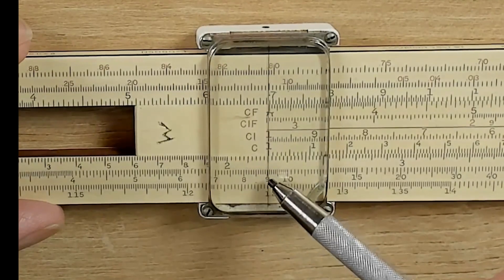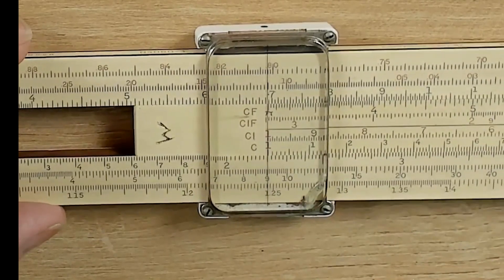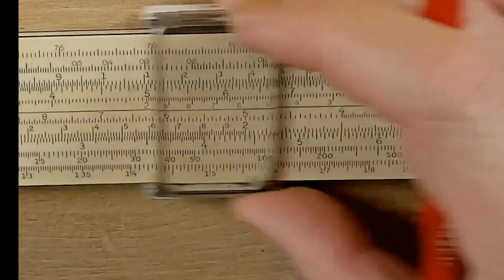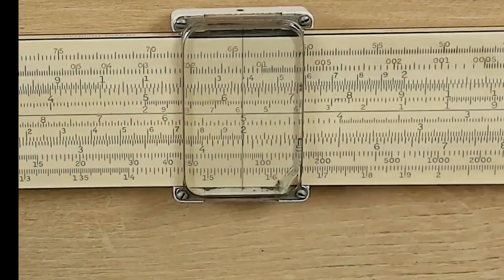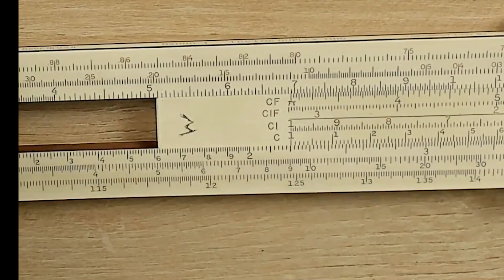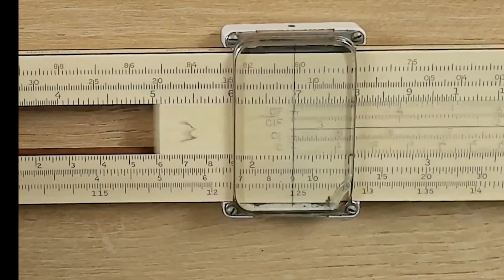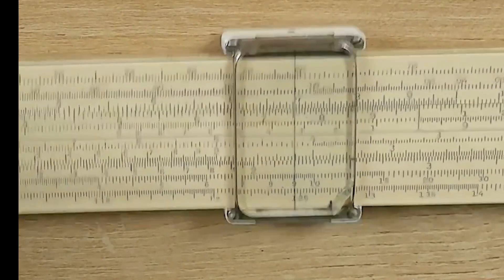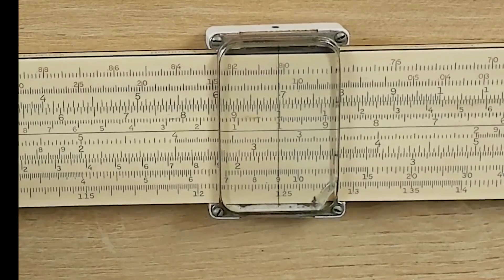So, 220 pounds would correspond to 100 kilograms. Likewise, 440 pounds, we can read right up, and that's 200 kilograms. But what about weights down in this area here? It might be a little bit more convenient to us to use the CF scale, simply by putting the index of the CF scale directly over that 2.2.